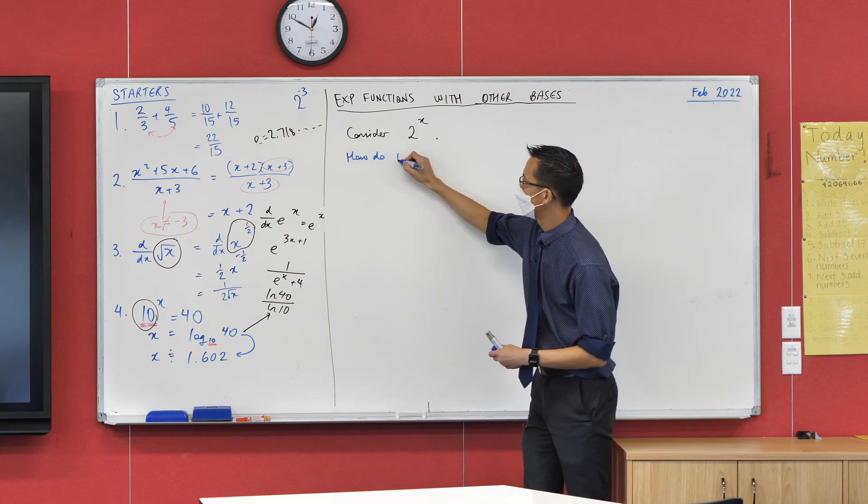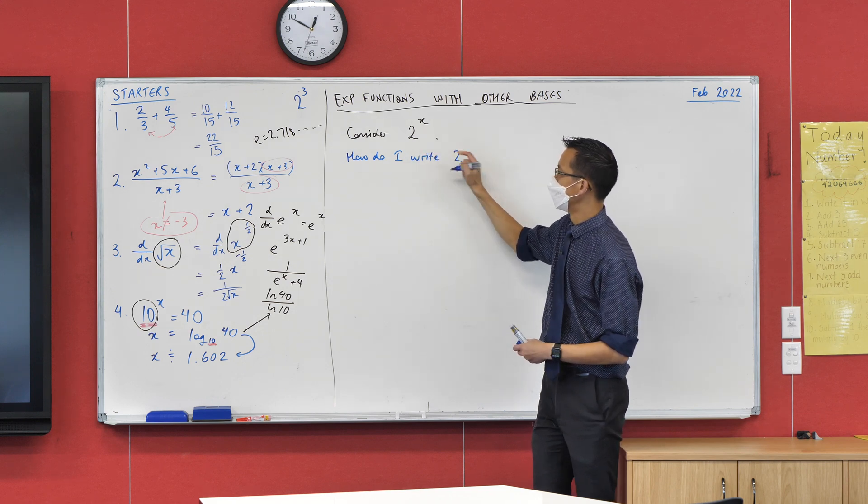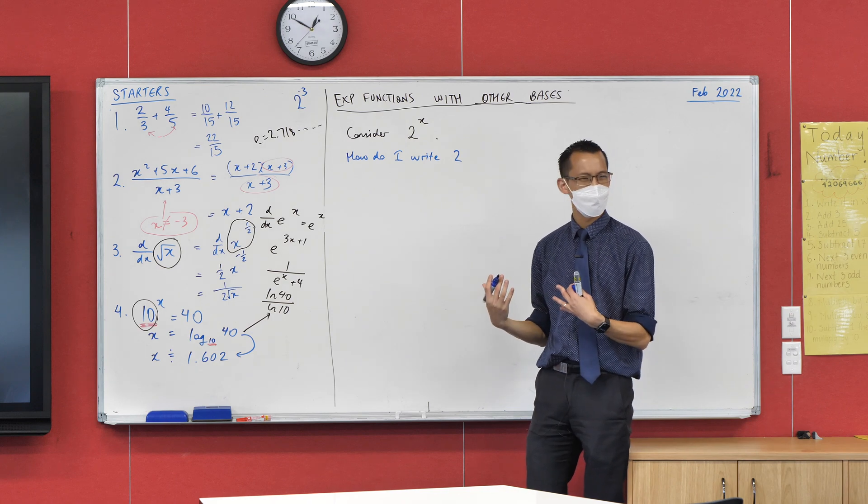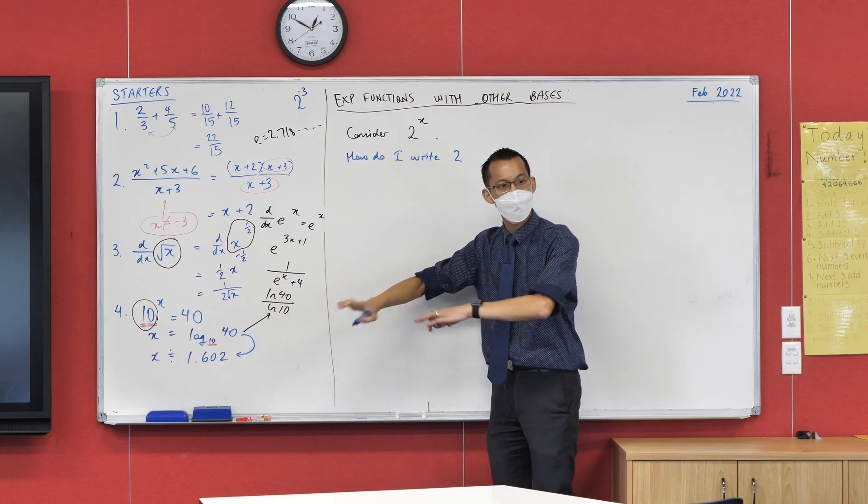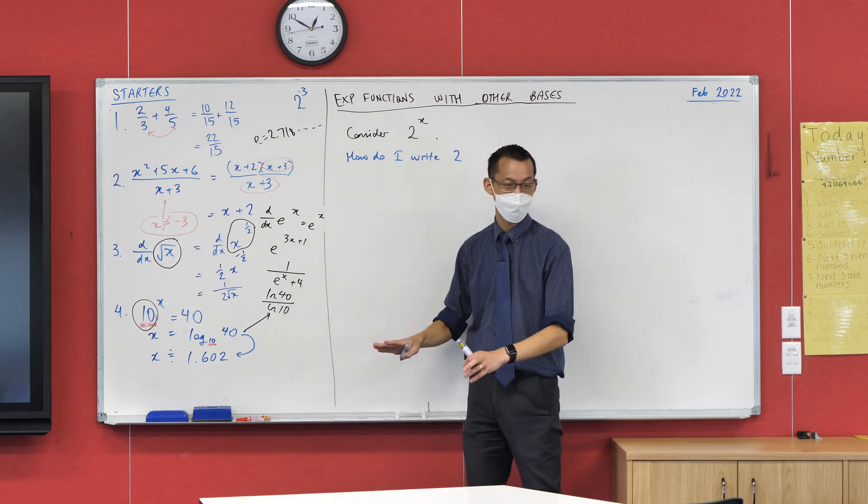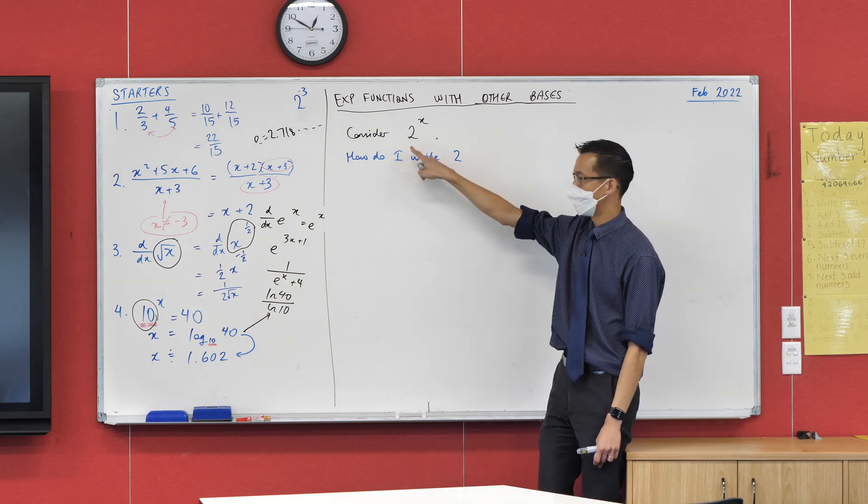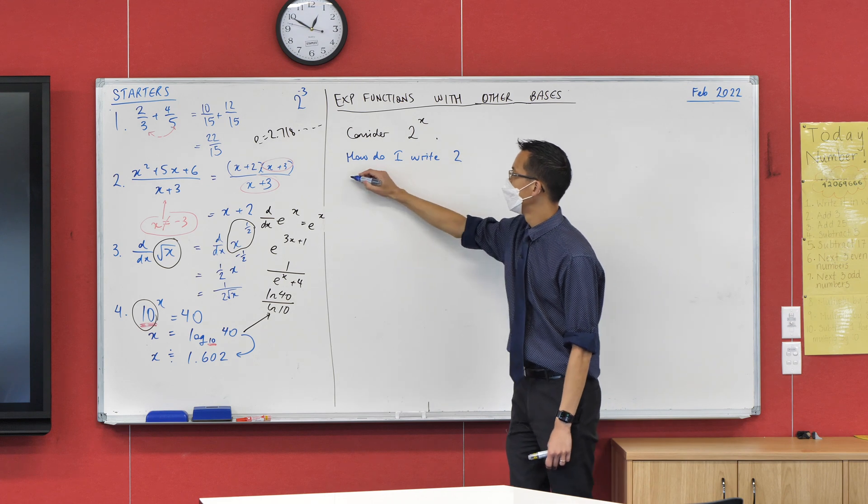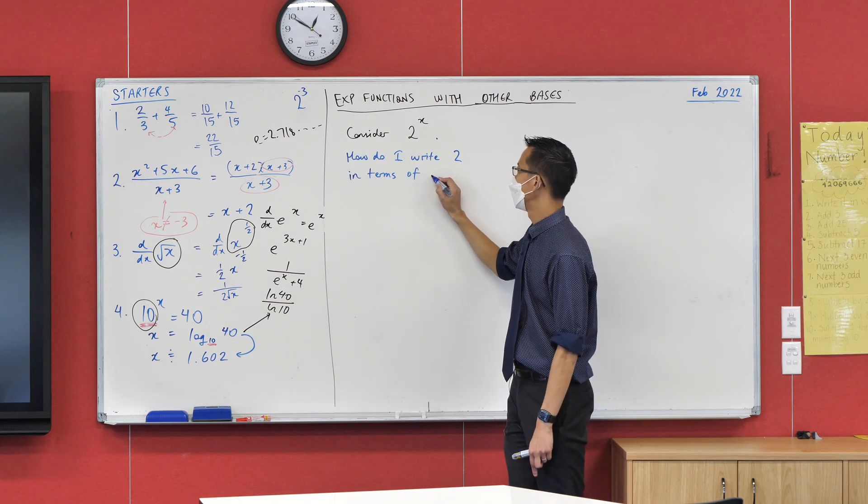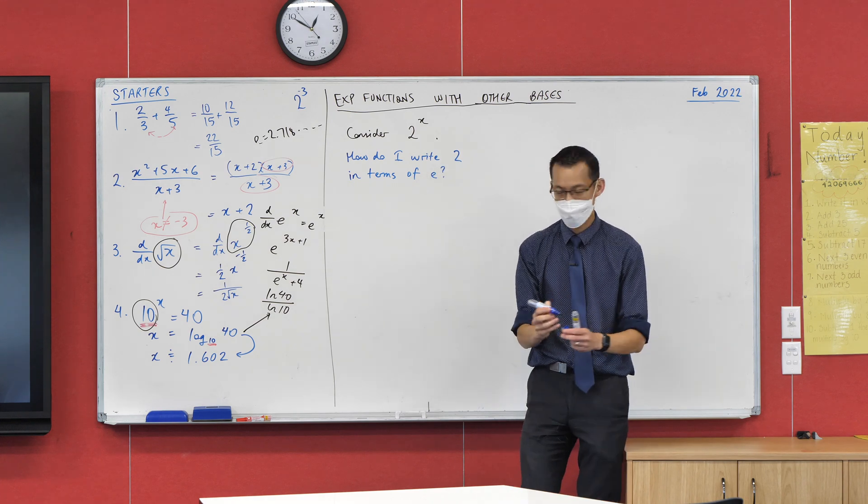How do I write 2, like that's the base that's there, but I want to write it in terms of e. If there was an e there, I'd be okay. Like even weird things with e, I can deal with them, but I've got a 2 there. So I want to write 2 in terms of e. That's the question.